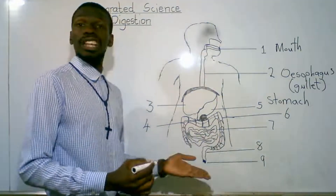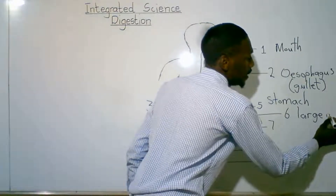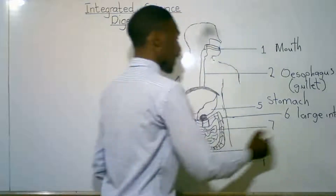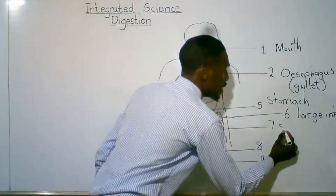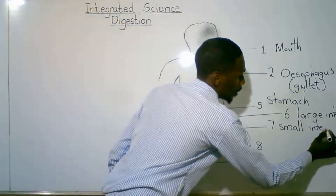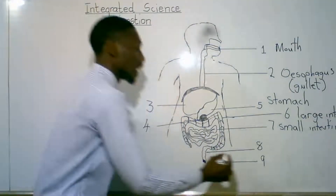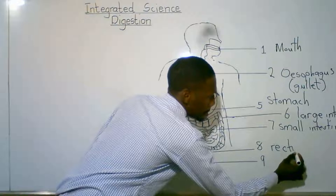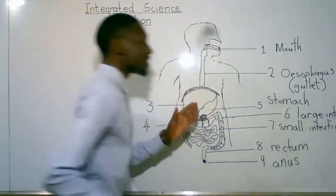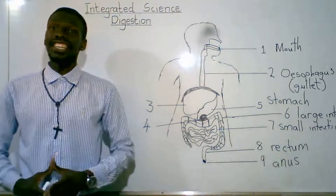From the stomach, we've got the large intestine. From the large intestine, we've got the small intestine. From the small intestine, we've got the rectum, then the anus. So these are the parts that make up the alimentary canal.